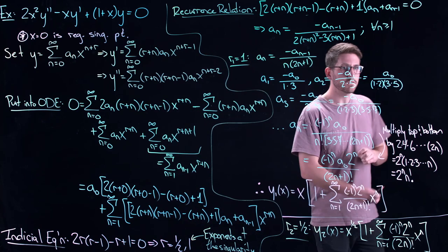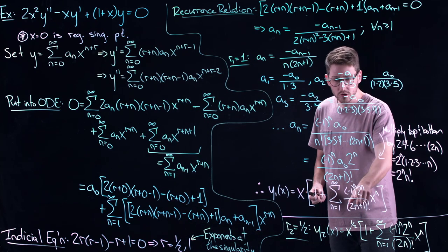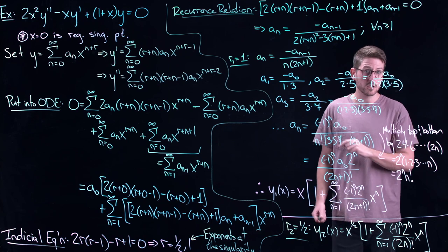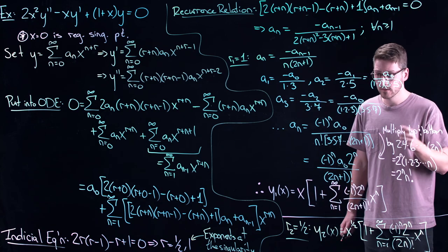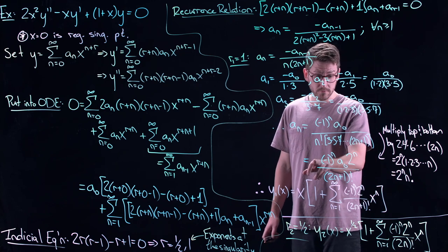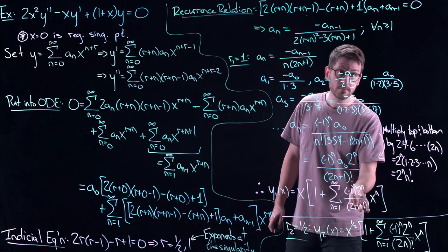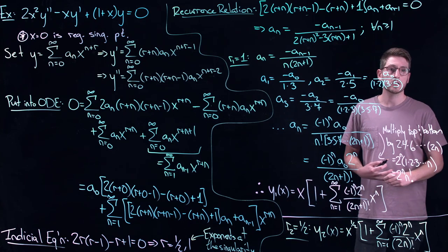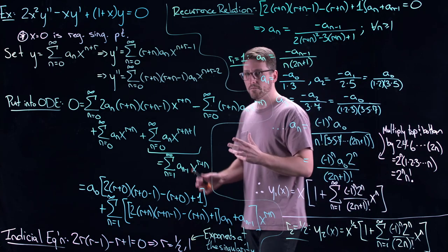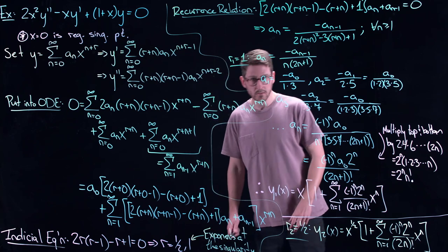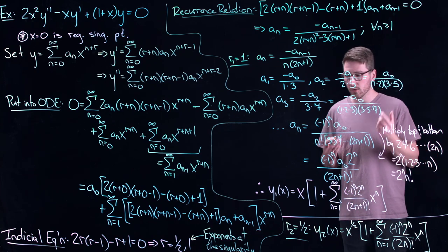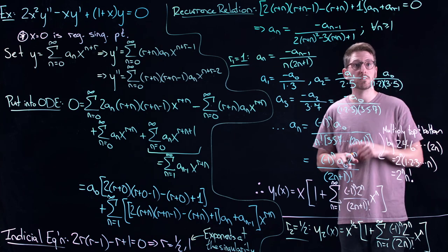I'll leave it as an exercise for you to show that both solutions have infinite radius of convergence — they converge for every single value of x. You can do this using the ratio test, since we have a general form for the coefficients. When we come back in the next lecture, we'll keep talking about regular singular points and further explore more examples.